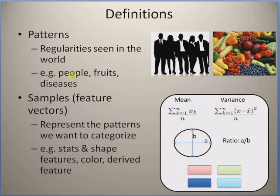For example, we can always recognize people, their faces, fruits, and vegetables. Some specialized people can easily recognize diseases, and with more training we can recognize more difficult patterns. The goal of the field of pattern recognition is to automatically recognize or categorize these patterns.